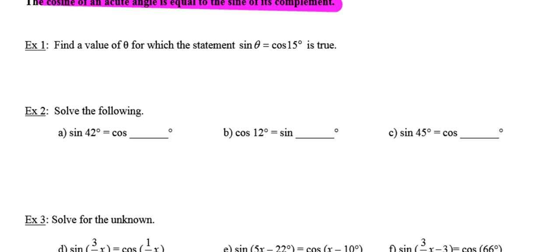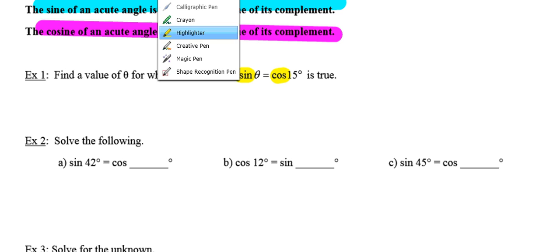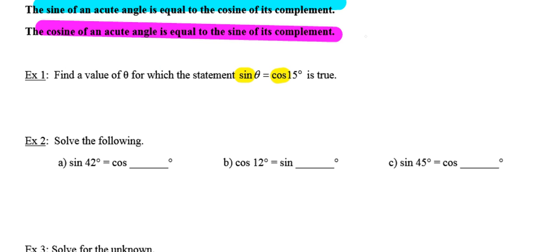So down at the bottom where they're asking us to solve these problems, we're going to keep those two big ideas in mind. Number one says find a value of theta for which the statement sine of theta equals cosine of 15 degrees is true. So we're comparing sine and cosine. What that means is that theta and 15 degrees have to be complementary angles. If they're complementary angles, we know that their sum is 90 degrees. So I'm going to write a little equation here that sums them up, sets them equal to 90. That means theta must be equal to 75 degrees.